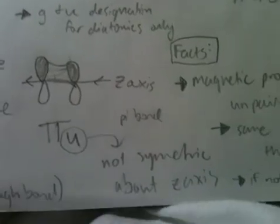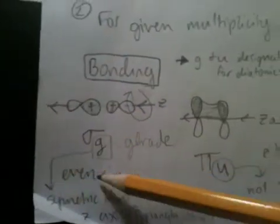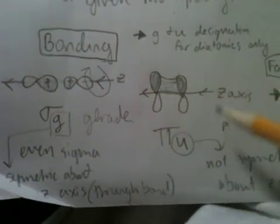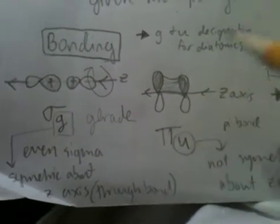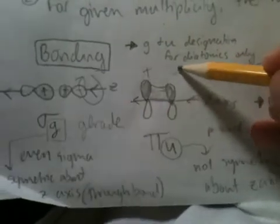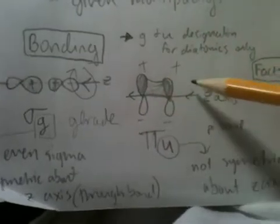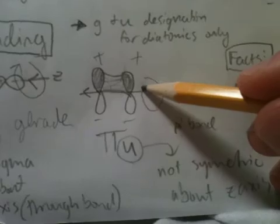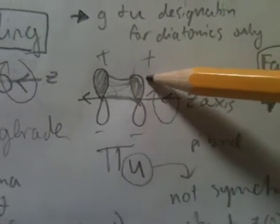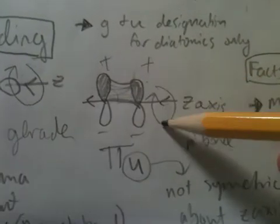However, if you had a pi bond like this, so that's for a sigma bond, sigma bond, right? And then if you have a pi bond, this is what the pi bond looks like. So, you know, plus, plus, minus, minus. If you go around the z-axis, you will not find the same thing on top as you did on the bottom.